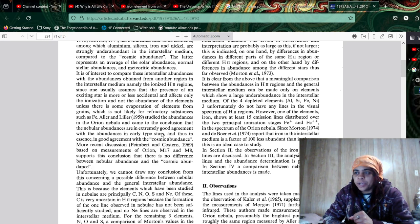Yeah, I'll go with dual region, since one usually assumes that the presence of an exciting star is more or less accidental and affects only the ionization and not the abundance of the elements unless there is some evaporation of elements from grains, which is not likely for refractory substances such as iron or the fae.